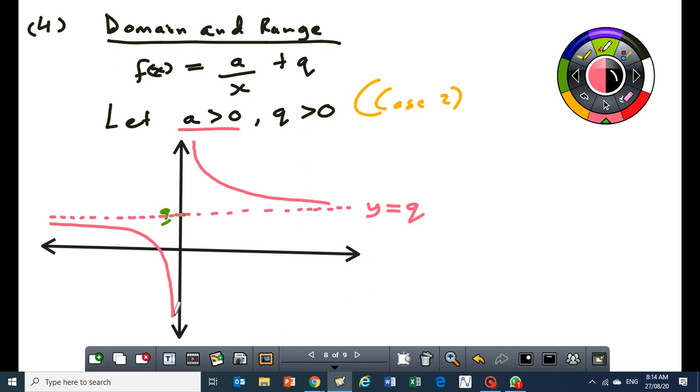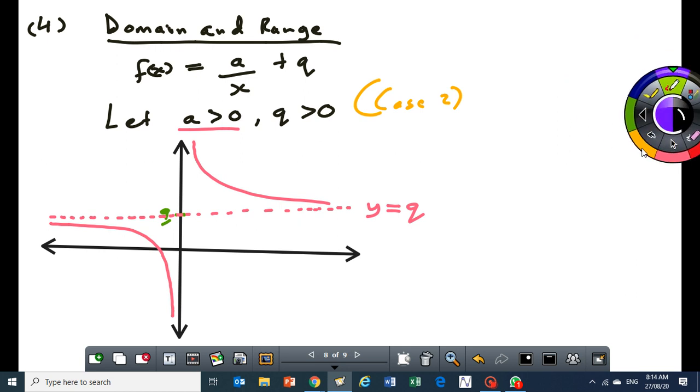Now, I want you to make sure you pay attention carefully. Let's start with the domain. Since the Y axis is an asymptote, it means X can never be zero. I'm sure you can agree with me.